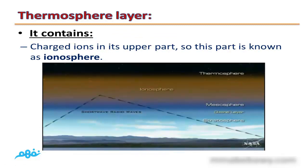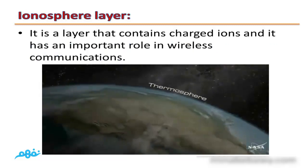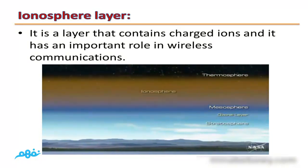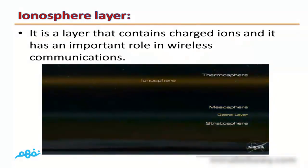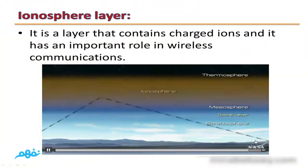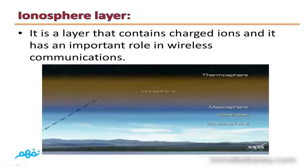It contains charged ions in its upper part, so this part, because it contains ions, is known as ionosphere. Ionosphere layer is a layer that contains charged ions and it has an important role in wireless communications. As you can see from this video, this is the ionosphere layer. It reflects the wireless communications, so it plays an important role in telecommunications and wireless communications.